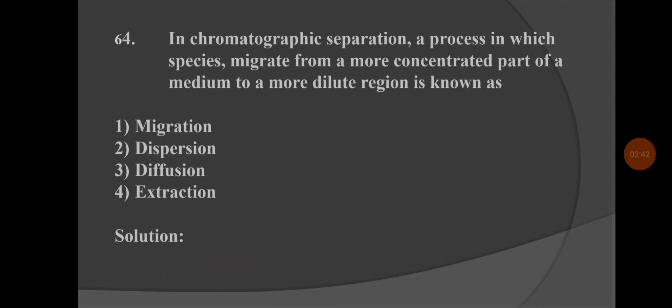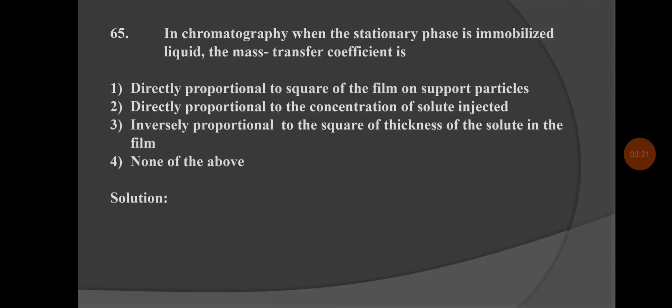Next question: In chromatographic separation, a process in which species migrate from a more concentrated part of a medium to a more dilute region is known as — option 1: migration, option 2: dispersion, option 3: diffusion, option 4: extraction. The correct answer is option 3: diffusion.